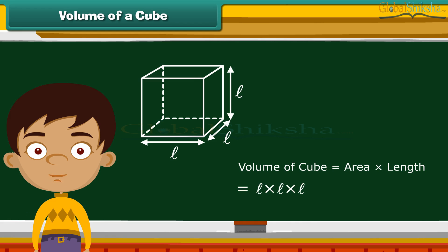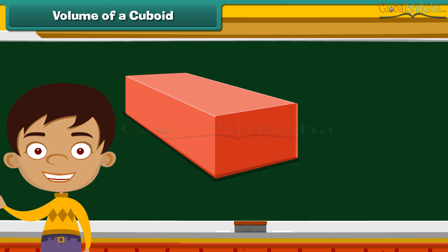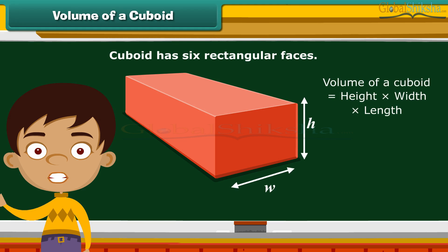Therefore, the formula for the volume of a cube is L cube. Look at this closed box. This is a cuboid which has six rectangular faces. Its volume is calculated as height into width into length, or simply, volume equals H into W into L.